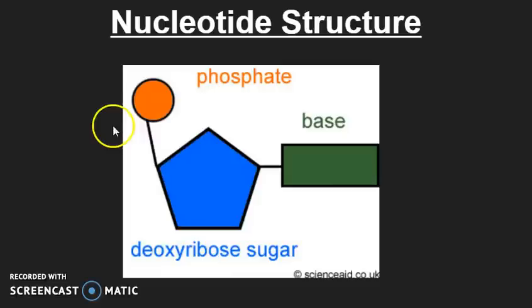The bars represent covalent bonds, and what we're seeing here is that all three parts of the nucleotide are all covalently bonded together. So there are bonds that are shared between the phosphate and the deoxyribose sugar, and there's also bonds that are shared between the deoxyribose sugar and the base.